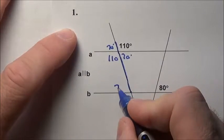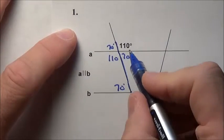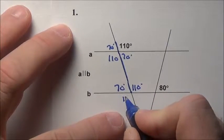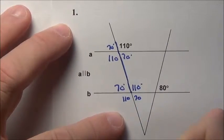So top left is 70, so right here is 70. Top right is 110, so right here is 110. That makes this 110 and 70.